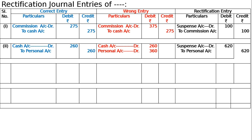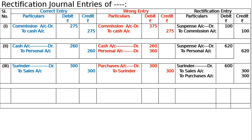The third entry: goods sold to Surinder recorded in the purchase book as ₹300. The correct entry is Surinder debited to sales account ₹300. By mistake it was recorded as purchase account debited ₹300. The rectification entry will be: Surinder debited ₹600 (double the amount), to sales account ₹300 and to purchase account ₹300 — being goods sold to Surinder recorded in purchase book, now rectified.